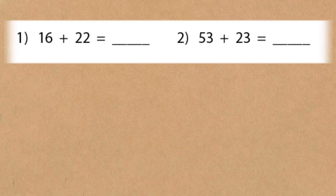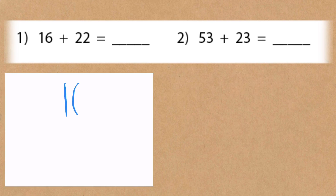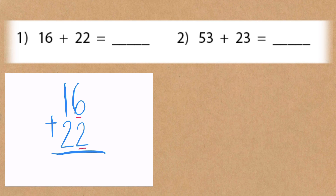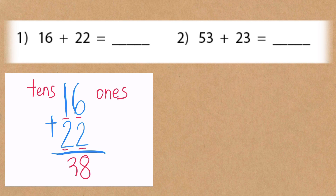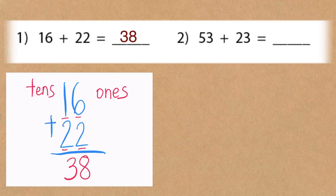Let's look at these examples written in the horizontal number sentence and solve them using the vertical number sentence. Let's begin: 16 plus 22 is equal to blank. We always begin with the ones place: six plus two is equal to eight. Let's proceed to the tens place: one plus two — the answer is three. The final answer is 38.